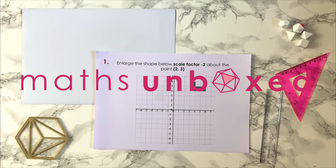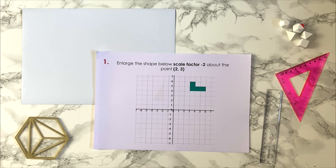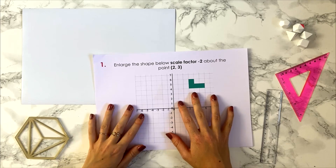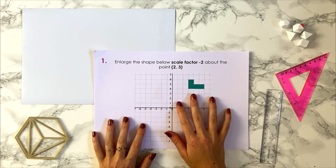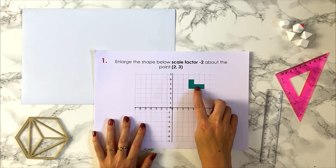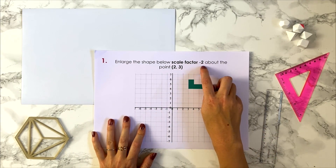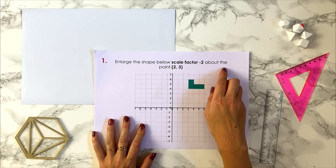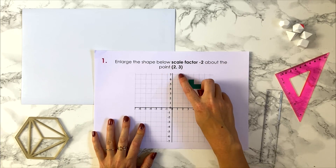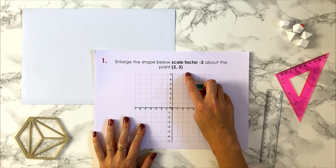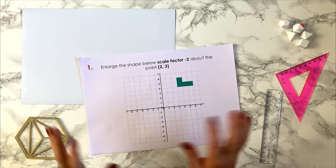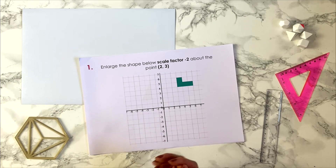Let's now have a look at how to enlarge shapes by negative scale factors. So I have an exam style question here. It says enlarge the shape by a scale factor of minus two about the point. We're going to start off by using our usual method for enlargements.